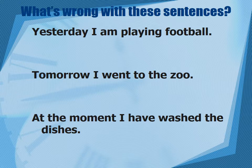What's wrong with these sentences? 'Yesterday I am playing football.' Yesterday is talking about past tense, so 'I am playing' is wrong. 'Tomorrow I went to the zoo.' Tomorrow indicates future tense, but 'went' is a past tense verb — it's wrong. 'At the moment I have washed the dishes.' 'At the moment' is present tense but 'have washed' is simple past. These three examples show a clear disparity in subject-verb tense agreement.